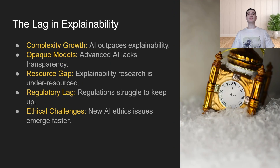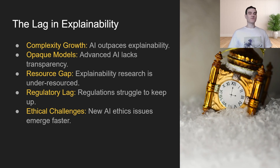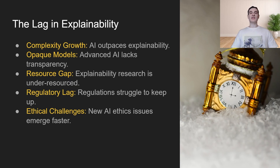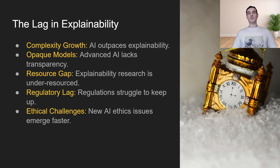So these last 60 years, there's been a huge lag in AI explainability, and this is caused by multiple factors. First of all, complexity growth. It turns out to be way easier to just build a more powerful neural network by adding computational power and adding data. But in order to do AI explainability, now we have a much more complicated system and we need to understand the inner workings of that. As a result, the power of neural networks are scaling much more quickly than our ability to explain it.